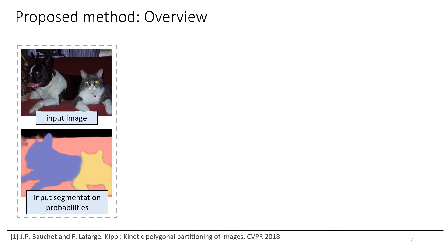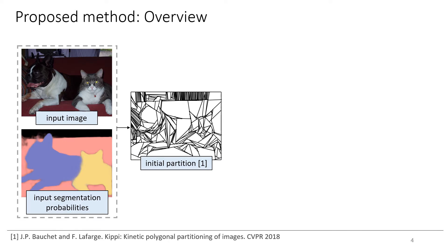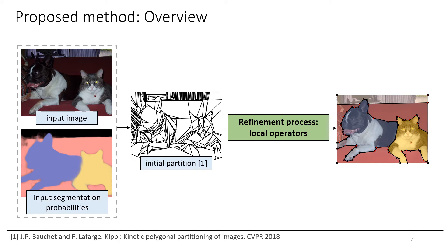Our algorithm takes an image with rough semantic probabilities. Starting from an inaccurate partition, we propose a refinement process consisting in locally splitting and merging cells, guided by an energy function. The outputs are low-complexity polygons capturing objects.